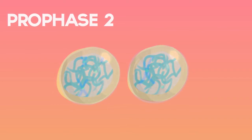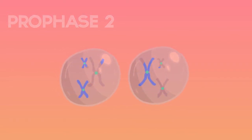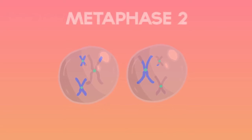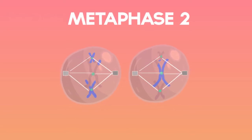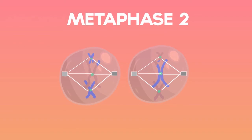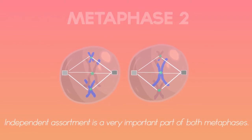During prophase II, the chromatin condense into chromosomes and spindle fibers begin to form. Metaphase II has the chromosomes aligned at the equator and held together by spindle fibers. Here is another time where independent assortment can occur.